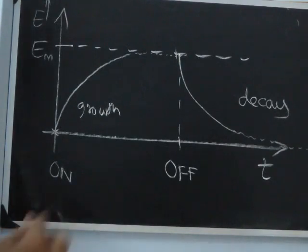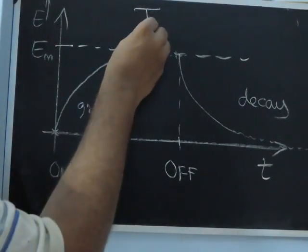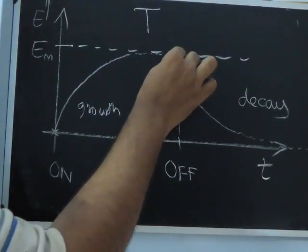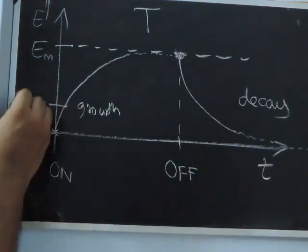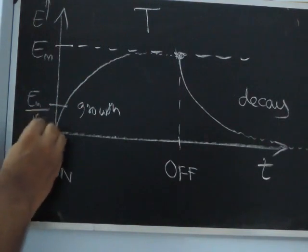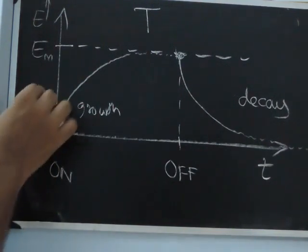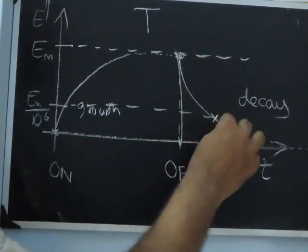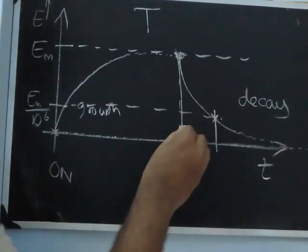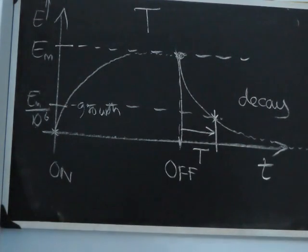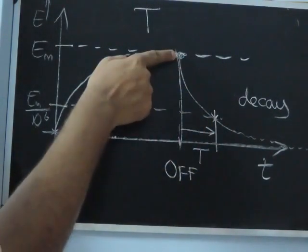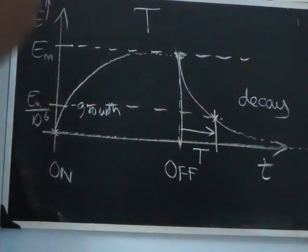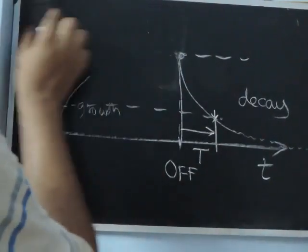Now we go back to reverberation time T. By definition, reverberation time T is the time taken for the energy to fall from its maximum value to one-millionth of that value, E_M divided by 10^6. This time interval during the decay — from maximum energy down to one-millionth of maximum — is the reverberation time, capital T. This corresponds to a drop of 60 decibels. We'll use the formula and evaluate T.